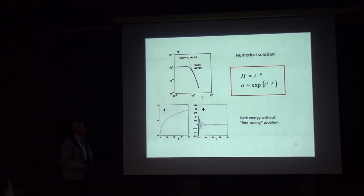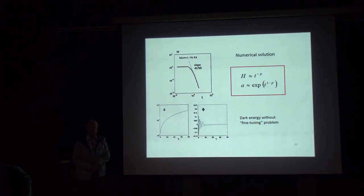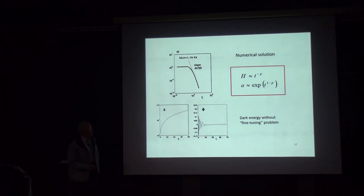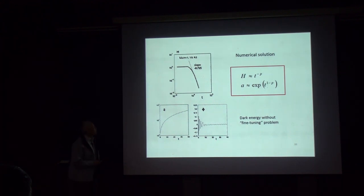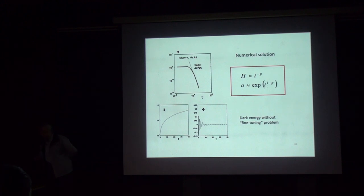Here is the numerical solution — the whole thing can be solved in MATLAB. The result is that the radius A increases as time to a fractional power P, where P is a parameter of the theory between 0 and 1. Since A accelerates, we have dark energy. The effective Hubble constant decays in time, which solves the so-called fine-tuning problem. The radius increases like this and the scalar field oscillates very rapidly.